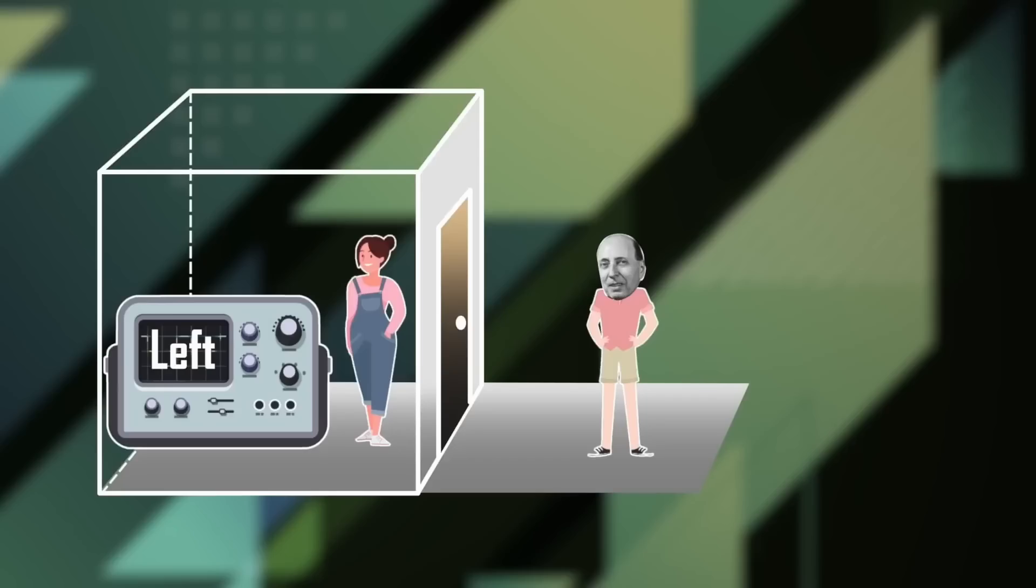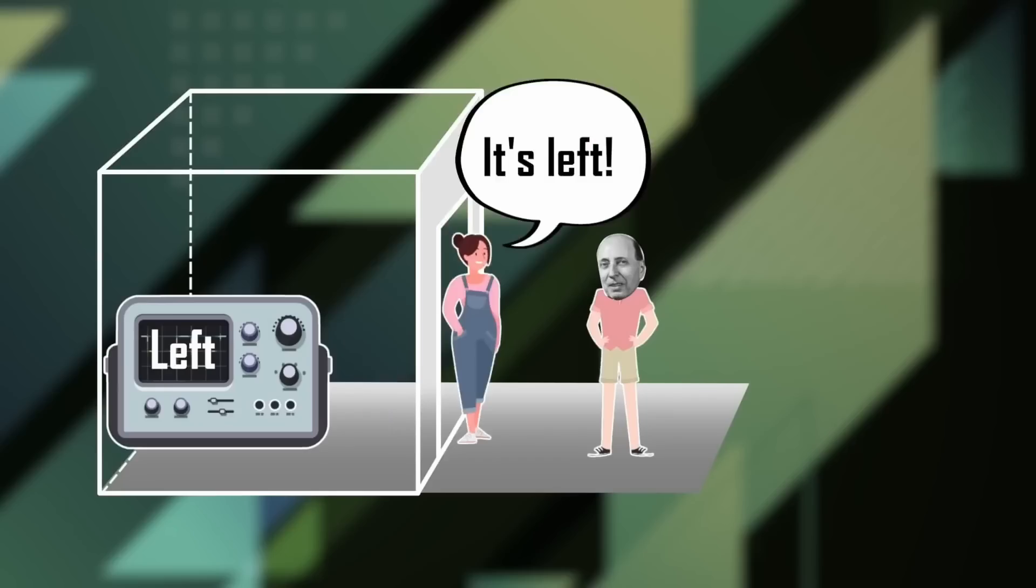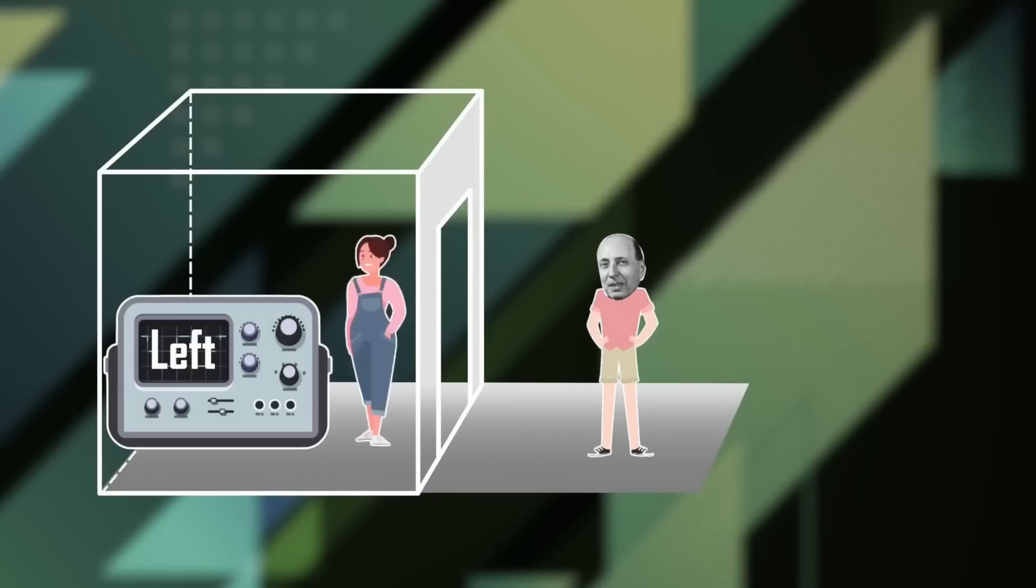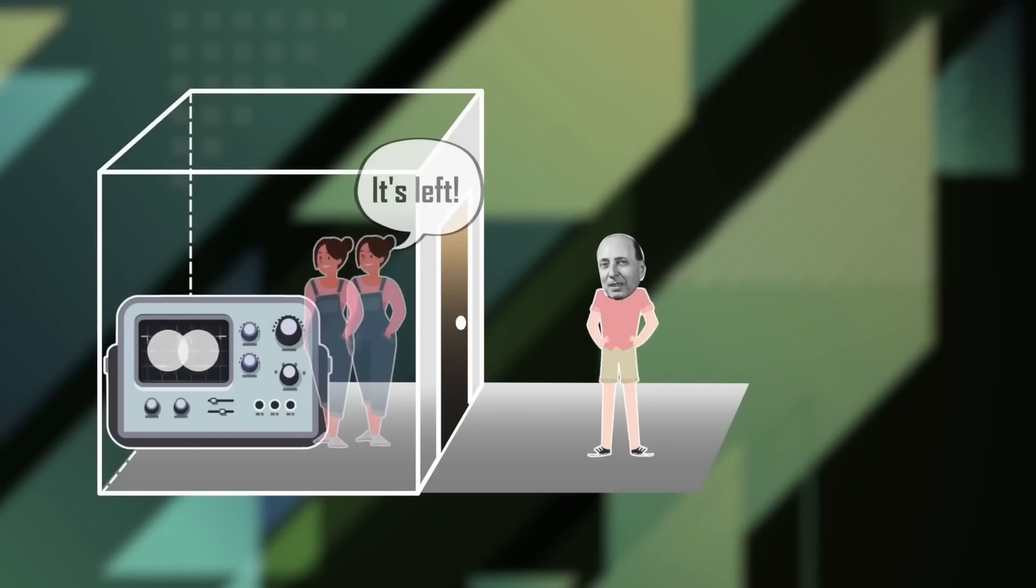Let's say she finds it left. You knock at the door and ask what she measured, and she says, well, it was left. So far, so obvious. But if you think the measurement is not a physical process, then you'd say the measurement only happens once she tells you the outcome. And before that, your friend herself was in a superposition, one in which she measured the particle left and right at the same time. And it's only once she tells you the result that the superposition of her disappears.